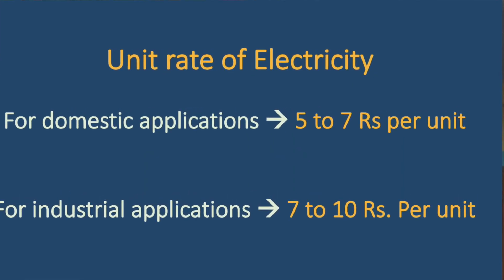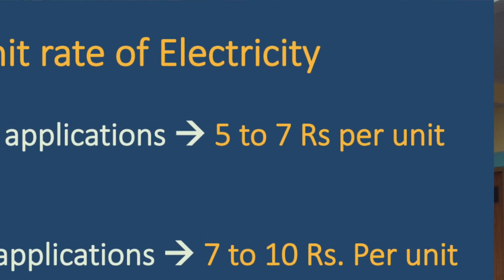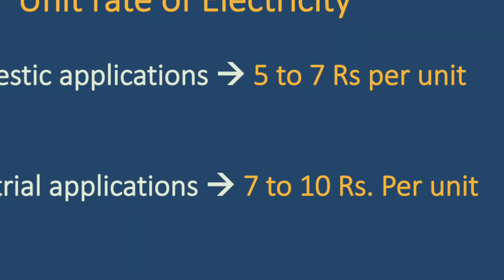Suppose an appliance is consuming 100 units per month and the rate of electricity is 6 rupees per unit — your running cost is 100 × 6 = 600 rupees per month. In India, electricity rates vary by application type. For domestic applications, rates vary from 5 to 7 rupees per unit for most states. For commercial or industrial applications, the rate varies from 7 to 10 rupees, sometimes 11 to 12 rupees. So your actual cost of operation depends on the rate of electricity and the amount consumed.